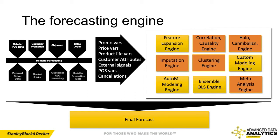Beforehand, we do an analysis to identify what features we can reduce before the main modeling exercise. We have a halo-cannibalization engine that takes the correlation and causality connection and identifies the subset of time series that have a halo impact. A halo impact is defined as a correlation at a particular lag where Granger causality is confirmed — if one grows and the other decreases, it's a cannibalization impact; if positively correlated, it's a halo impact.